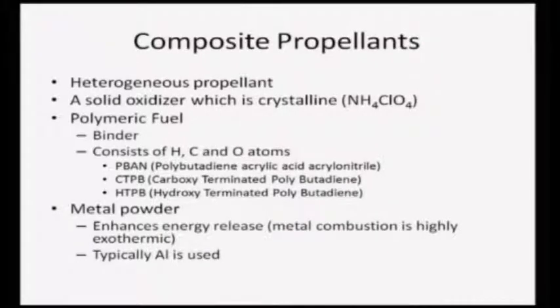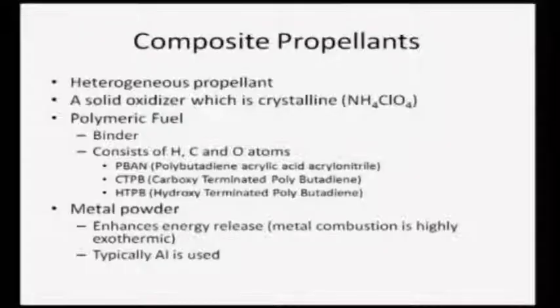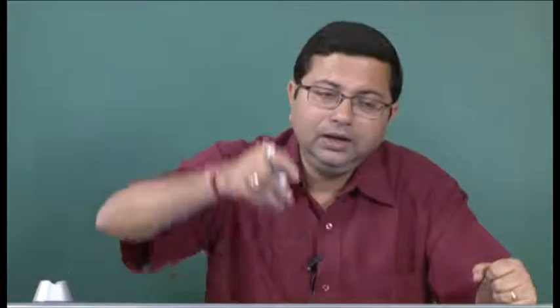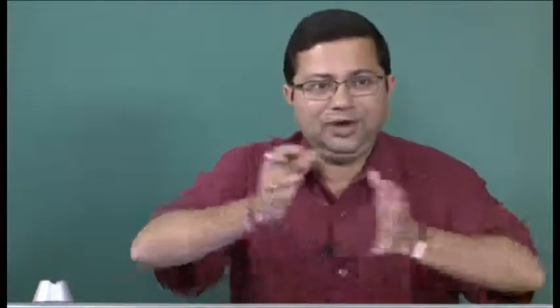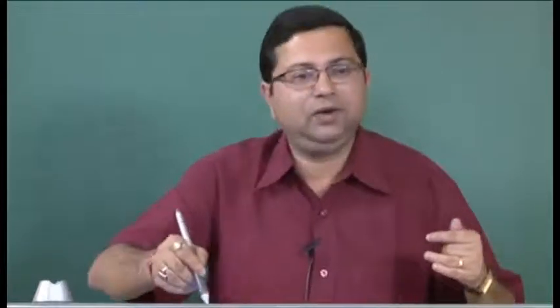The second type is composite propellant - these are typically heterogeneous propellants, meaning they do not have a smooth mixture fraction everywhere but will have local non-homogeneity embedded in a homogeneous mixture. Typically, a crystalline oxidizer like ammonium perchlorate - a solid oxidizer - will be embedded. It works predominantly as an oxidizer but also acts as a fuel, breaking into ammonia and HClO4. Ammonia is the fuel and hydrogen chlorate is the oxidizer.